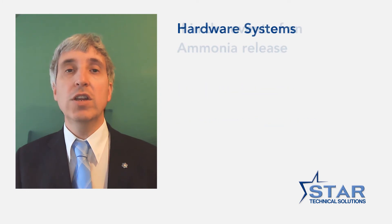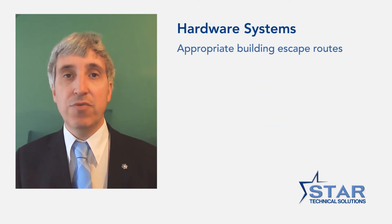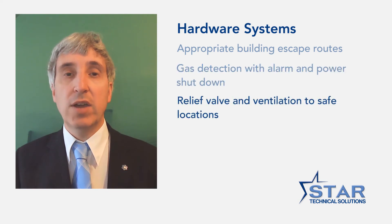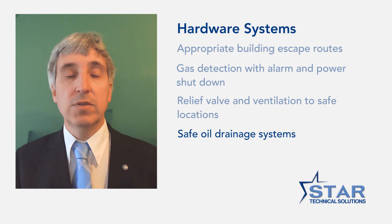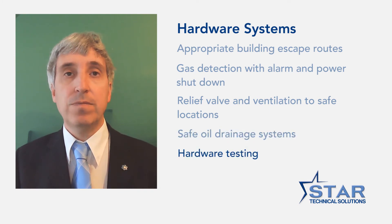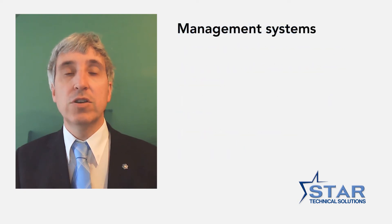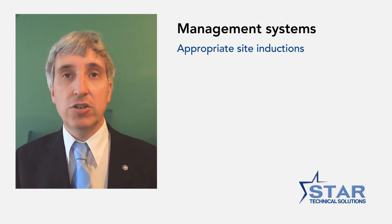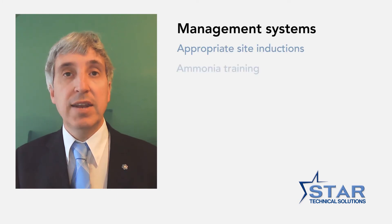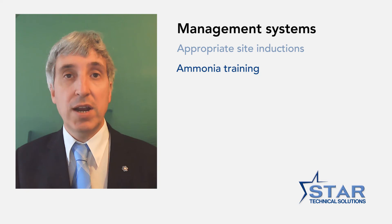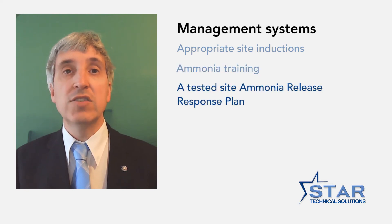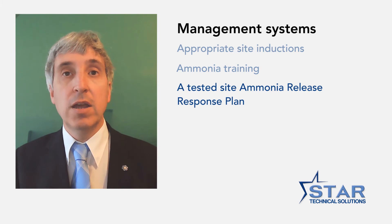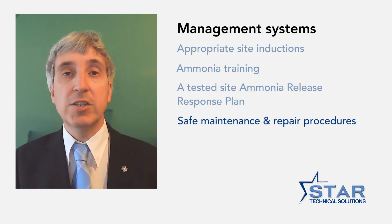The hardware systems could include having appropriate building escape routes, gas detection with alarm and power shutdown systems, relief valves and ventilation systems verified that they vent to suitable locations, and safe oil drainage systems. All these hardware systems must have a testing regime. The management systems could include having appropriate site inductions given at locations where ammonia is present, designating persons having ammonia training, a tested site ammonia release response plan, and most importantly, there must be suitable maintenance and repair systems and procedures in place.